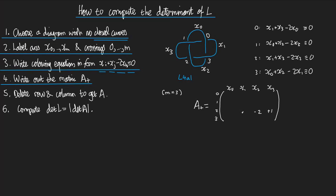What goes in position row 2, column x1? I go to colouring equation 2. I look for the coefficient of x1, that's 1. So here I get a 1.